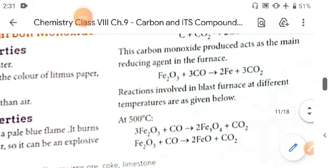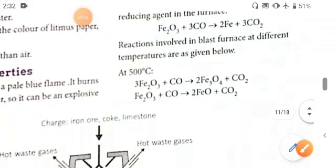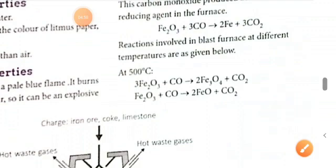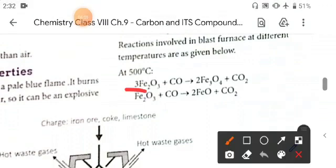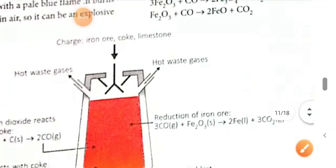This one is iron(III) oxide. It reacts with carbon monoxide to form iron, pure metal, and CO2 is released. The reaction involved in the blast furnace at different temperatures is given below. Iron(III) oxide reacts with carbon monoxide to form ferric oxide and CO2. Then this ferric oxide reacts with CO to form ferrous oxide and CO2 is released.